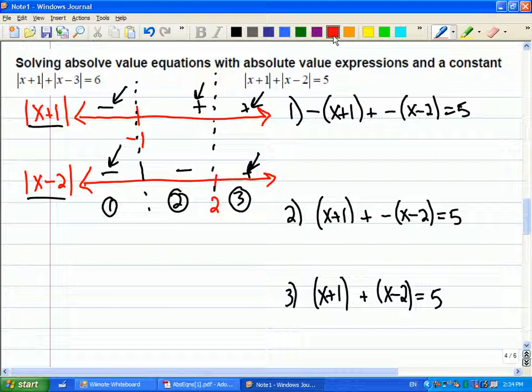If I collect up my like terms, I'm going to have negative 2x plus 1 equals 5. So negative 2x equals 4. x is equal to negative 2. So that's one of the possibilities I'll have to check.